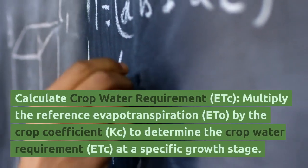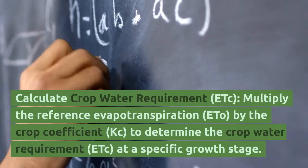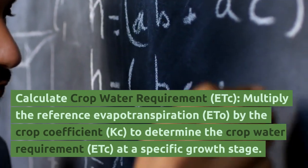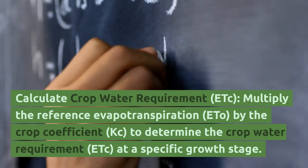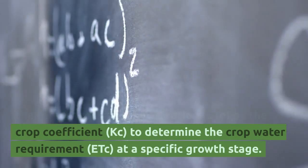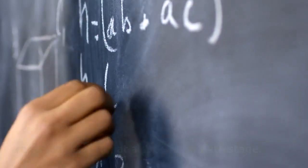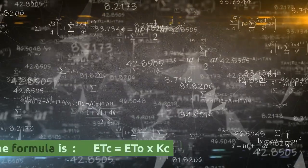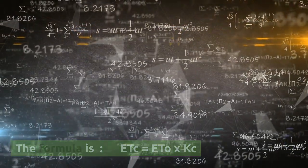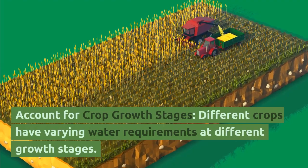Calculate crop water requirement (CWR). Multiply the reference evapotranspiration (ETo) by the crop coefficient (Kc) to determine the crop water requirement at a specific growth stage. The formula is: CWR = Kc × ETo.